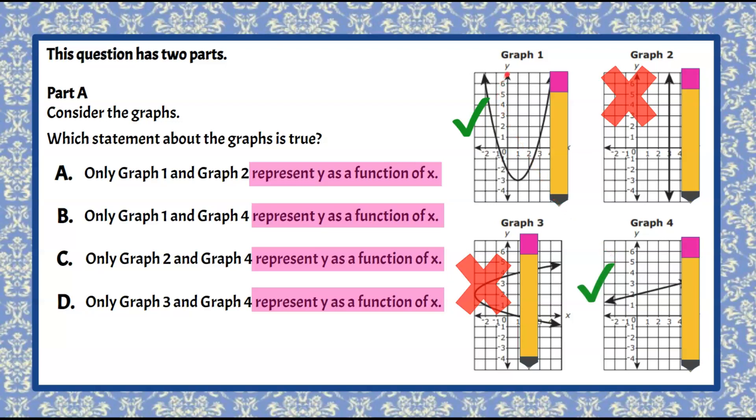So we came up with graph one and graph four that passed the vertical line test and they are functions. We go to our choices here and we can see that answer choice B is only graph one and graph four represent y as a function of x. So our answer for part A is B.